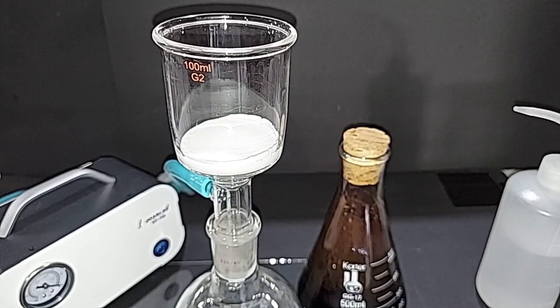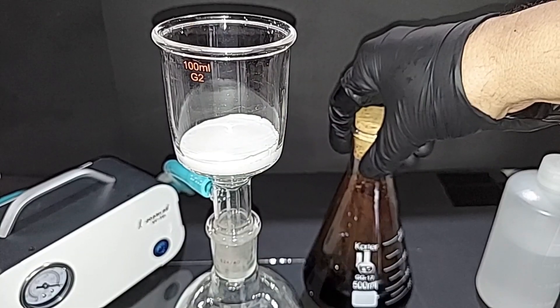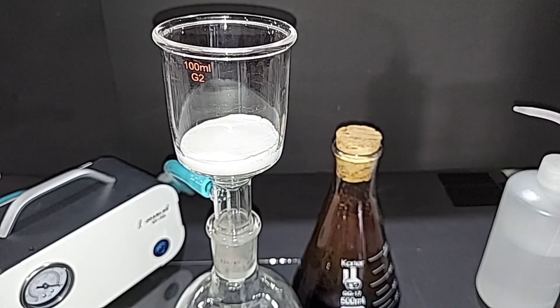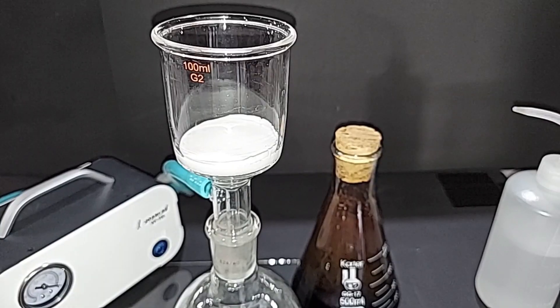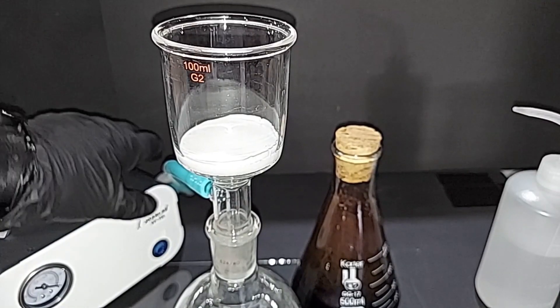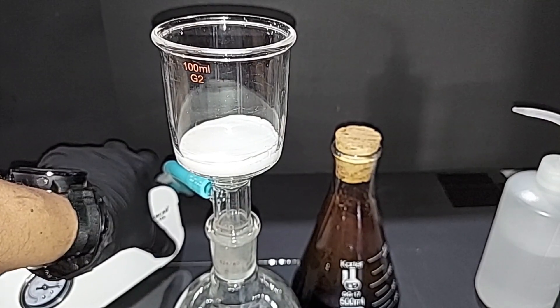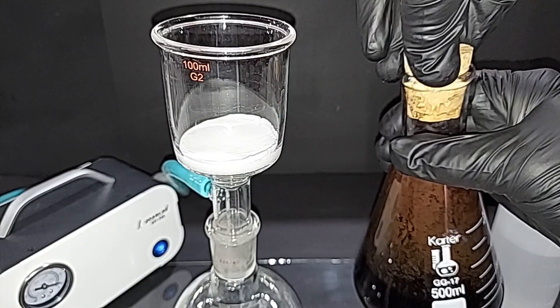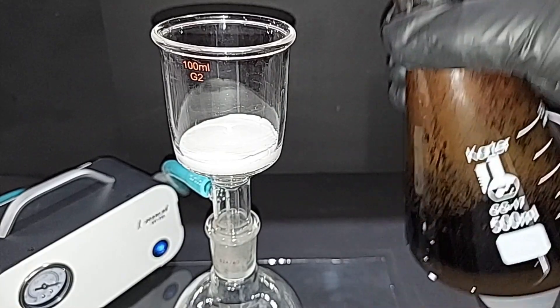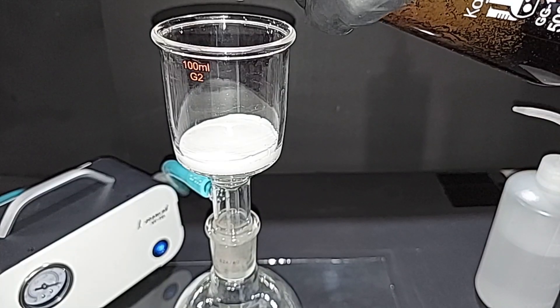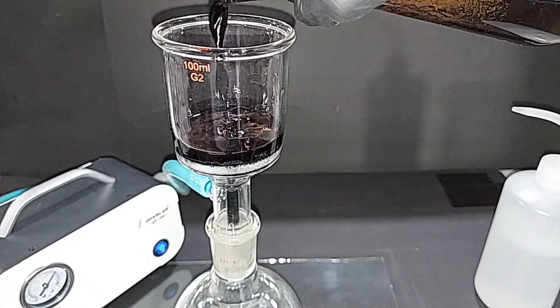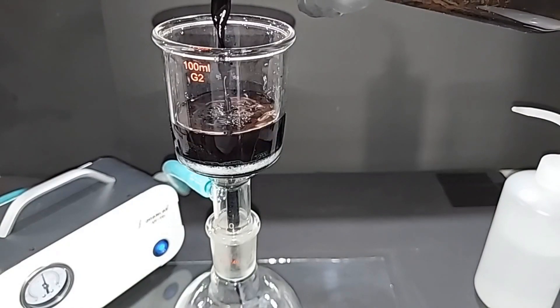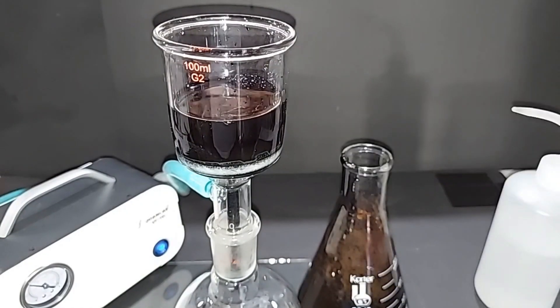I'm all set up here to do the vacuum filtration of the solution, and we're doing this to remove any unreacted manganese dioxide. I do have a very fine filter paper in there. Probably not necessary, but I'm always trying to save the fritted glass as much as I can. See that nice purple color? We're saving the filtrate.